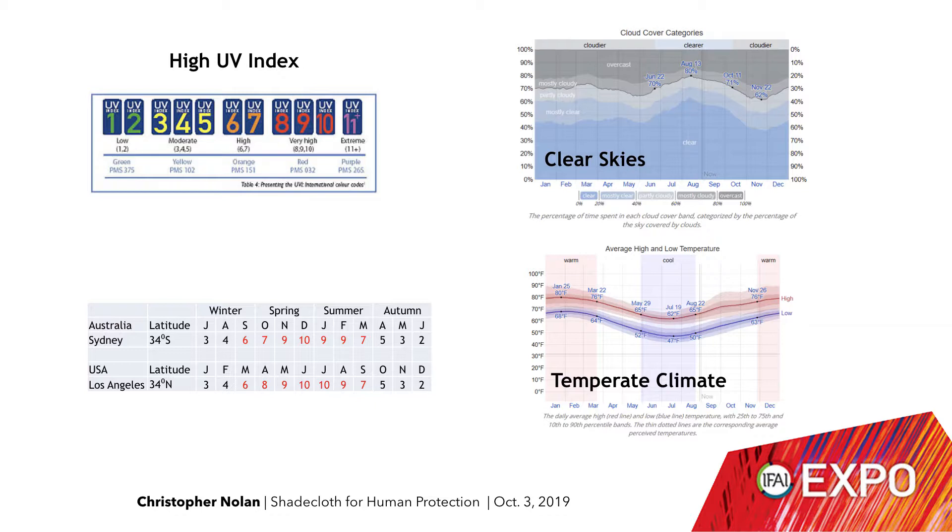Sydney is at the same latitude south — 34 degrees south — as Los Angeles is north at 34 degrees north, and the degree of solar intensity in terms of ultraviolet index is about the same: over seven months of the year it's high or very high.